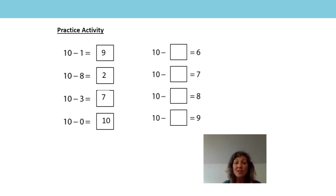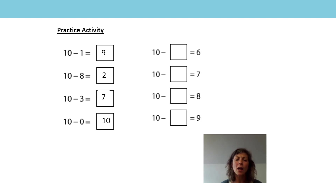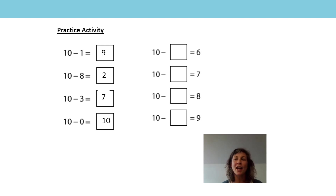I noticed that some of the equations on the other side use the same numbers. Like this one at the bottom: 10 minus something is equal to 9. 10 is made of 1 and 9, 9 and 1 make 10.